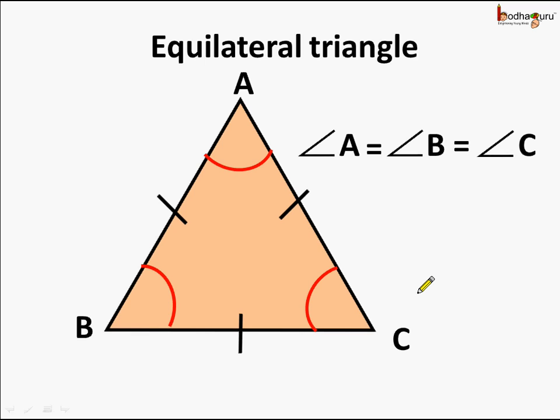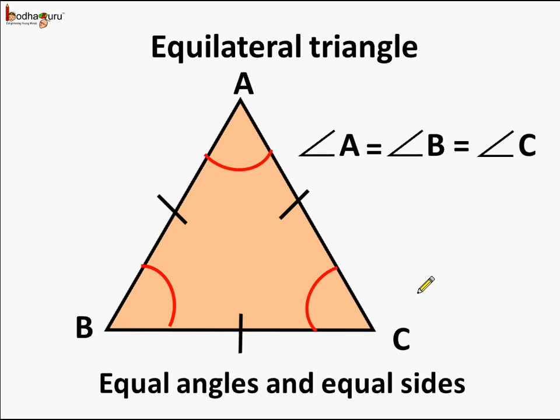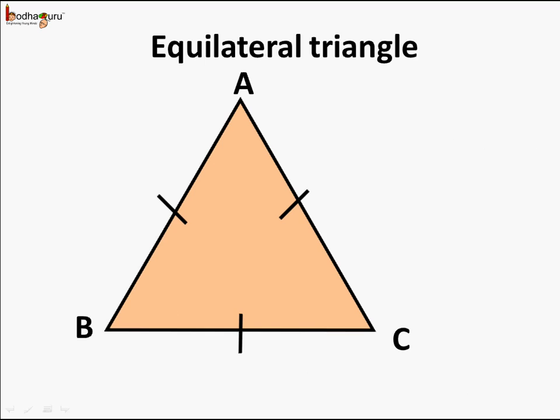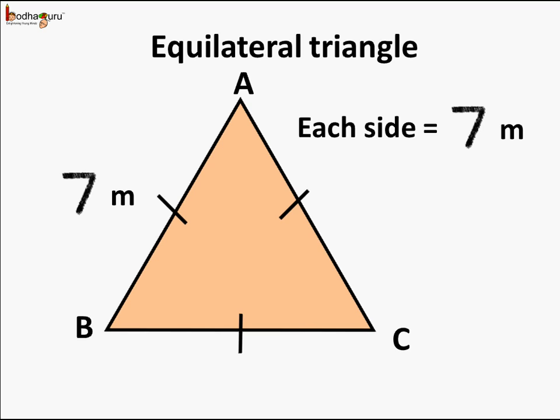So an equilateral triangle has equal angles and equal sides. Coming to the perimeter of an equilateral triangle — what is the perimeter? Let us assume each side is equal to 7 meters. So line segment AB is equal to 7 meters, line segment BC is also equal to 7 meters, and line segment CA is also equal to 7 meters.